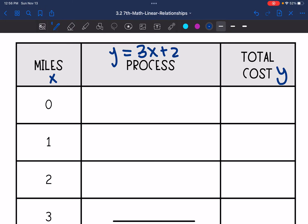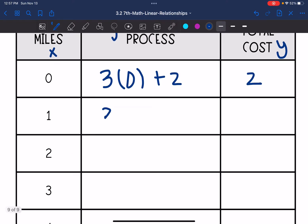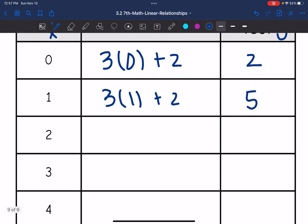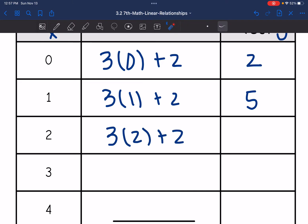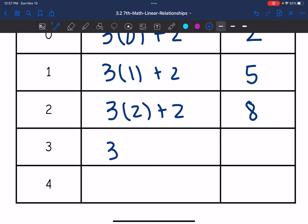So to find the total cost for 0 miles, I would do 3 times 0 plus 2, which would be 0 plus 2, so 2. And then 3 times 1 plus 2 would be 3 plus 2, which is 5. 3 times 2 plus 2 would be 6 plus 2, which is 8. And then 3 times 3 plus 2 would be 9 plus 2, which is 11.